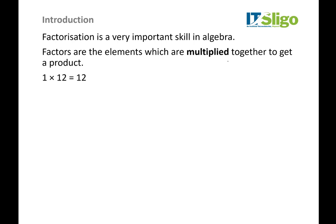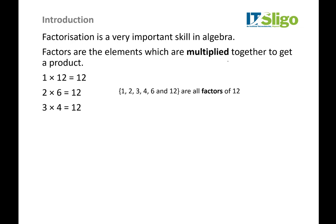If you look at 12 as the product, we could have factors of 1 and 12, or 2 and 6, or 3 and 4. So 1, 2, 3, 4, 6, and 12 are all factors of 12.